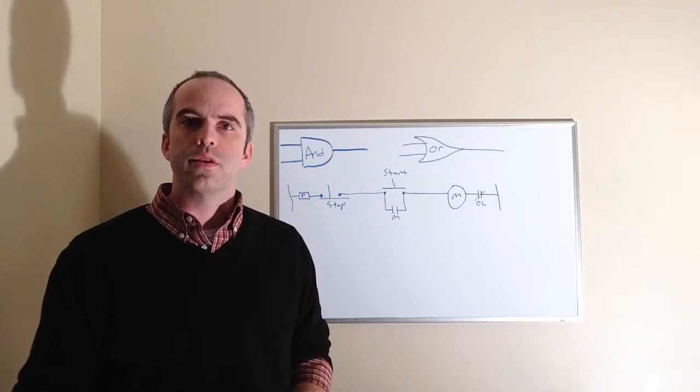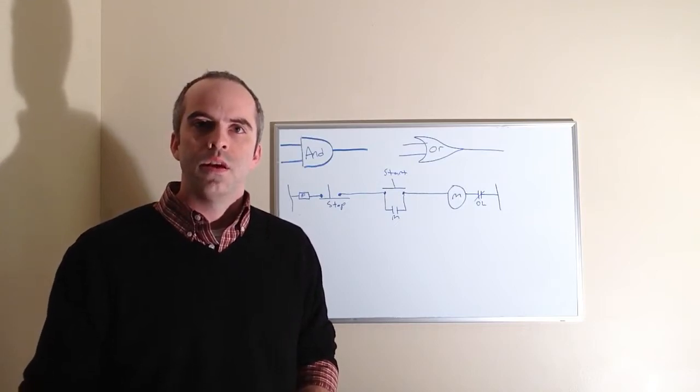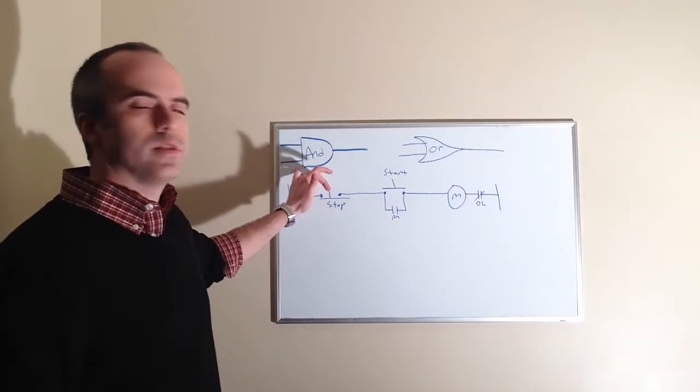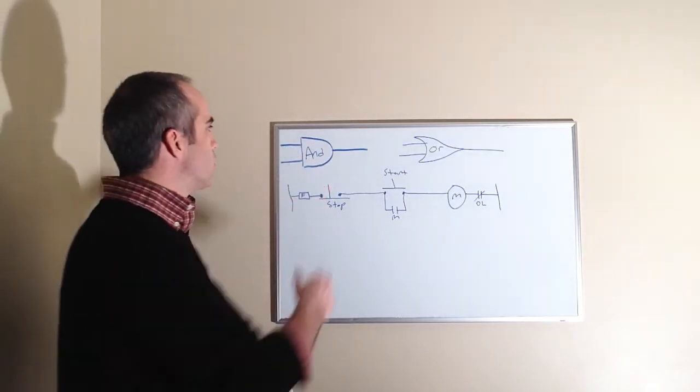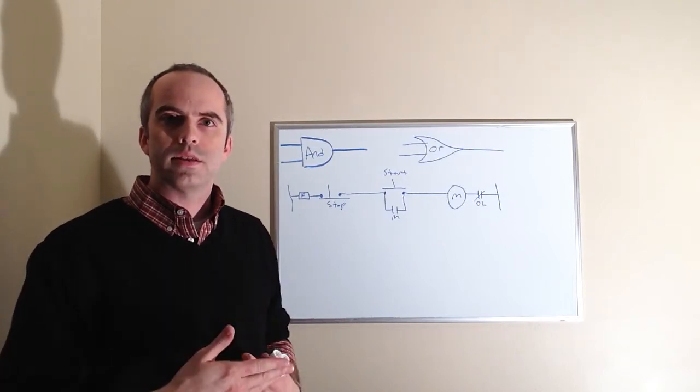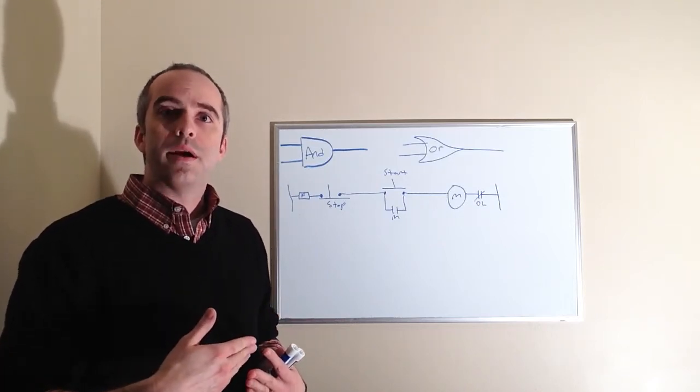We're not going to talk about any of that today. All we're going to talk about is just how they work and how they process logic. So we're going to start with an AND gate. An AND gate to the left has a series of inputs and then to the right has an output.